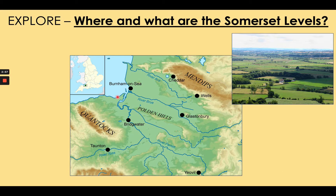So where and what are the Somerset Levels? Please write the subtitle and underline it with a ruler. This case study is all about an area of the United Kingdom called the Somerset Levels, located in the county of Somerset in South West England. The River Severn goes up between Wales and England, and this area connects onto the Somerset Levels and is very important as well.